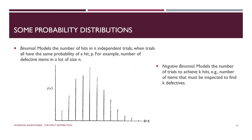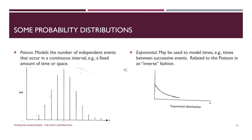The trials all have to have the same probability of success, called p. An example in quality control would be the number of defective items in a lot of size n. The negative binomial is closely related — it models the number of trials it takes to achieve a certain number of successes. It's kind of the binomial turned on its head, which is why it's called the negative binomial.